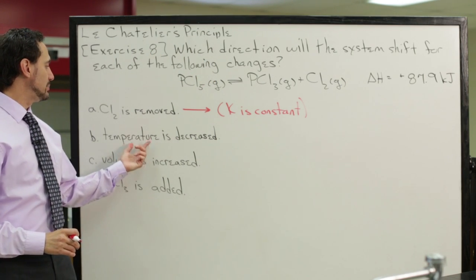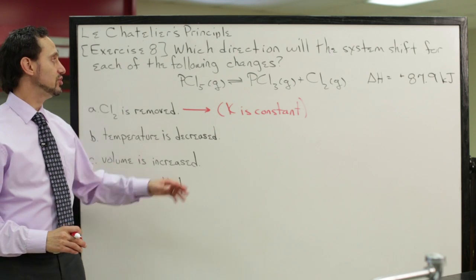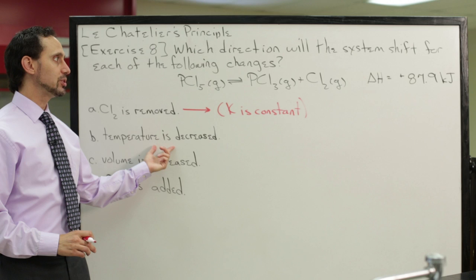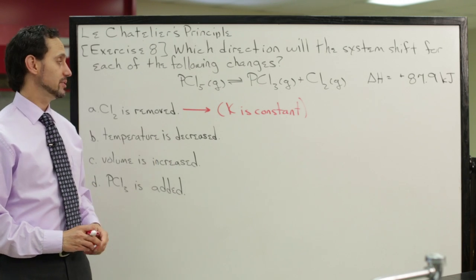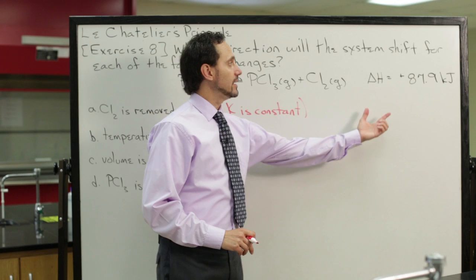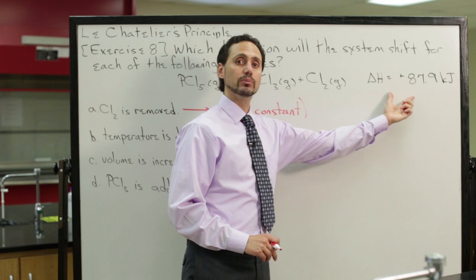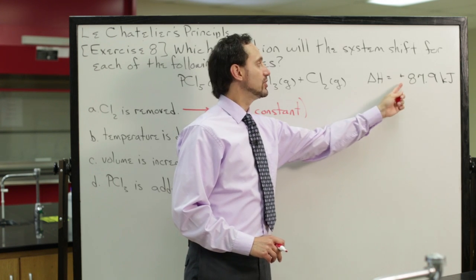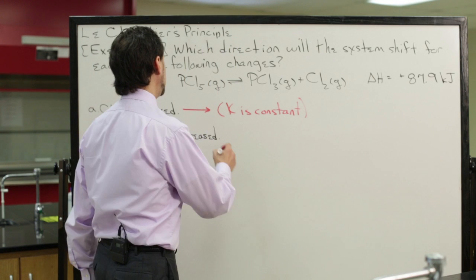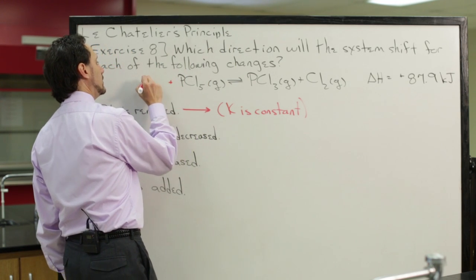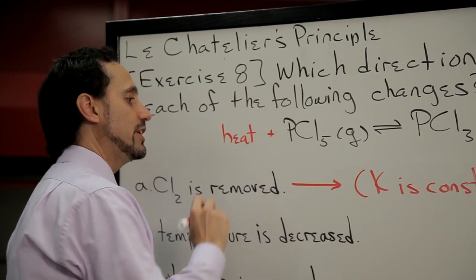Now let's look at the second example. What happens to this equilibrium system if the temperature is decreased? When we're changing the temperature, we have to pay attention to whether this is endothermic or exothermic. Since this is endothermic, that means that heat is acting like a reactant.